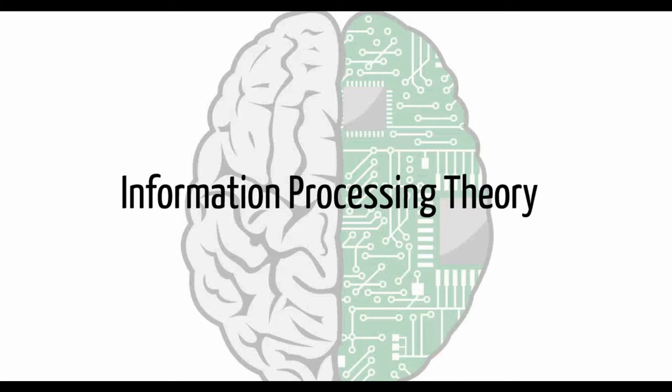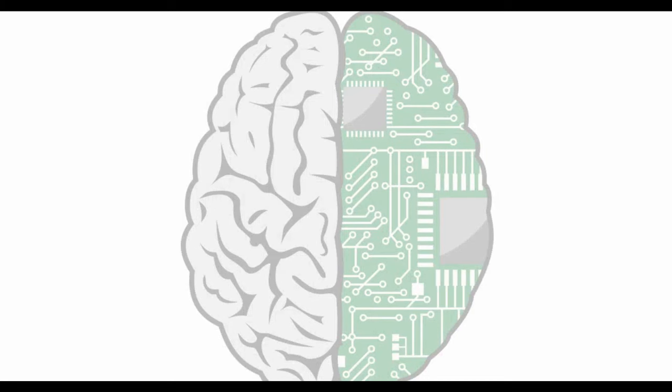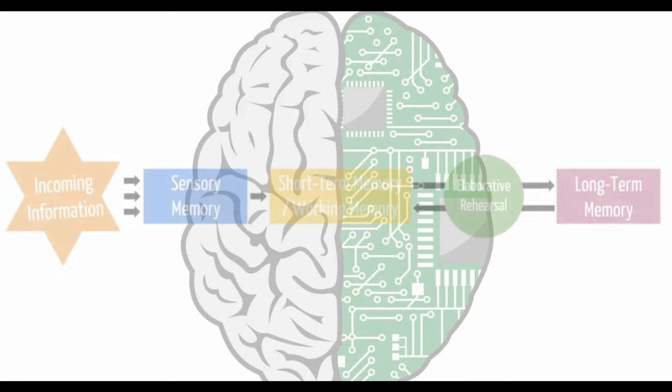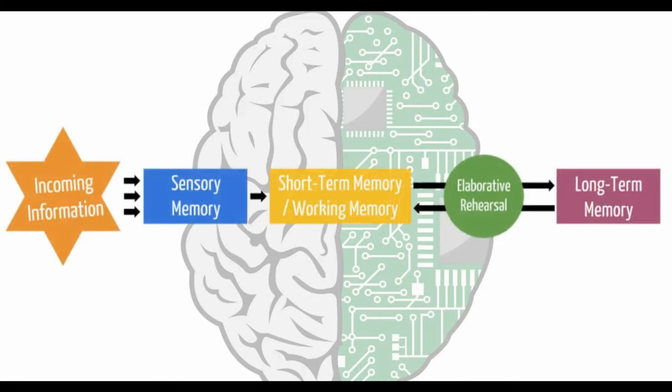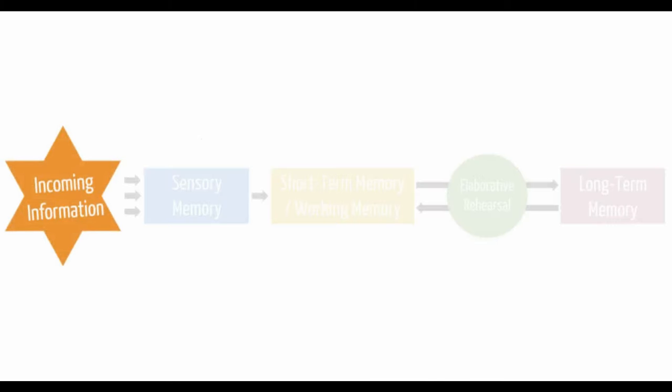Information processing theory. Previously, we introduced the stages of the information processing theory. It begins with the incoming of information from our environment.